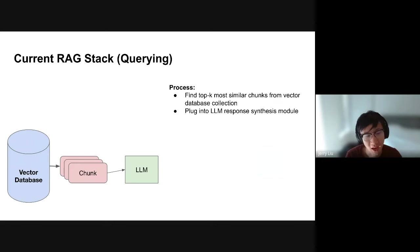Another use case many users relate to is complex document objects. A single PDF can have a lot of text but also many tables, images, charts, and graphs. How do we properly model this data, and how do we define the right retrieval algorithm to combine structured and unstructured data within a single document?